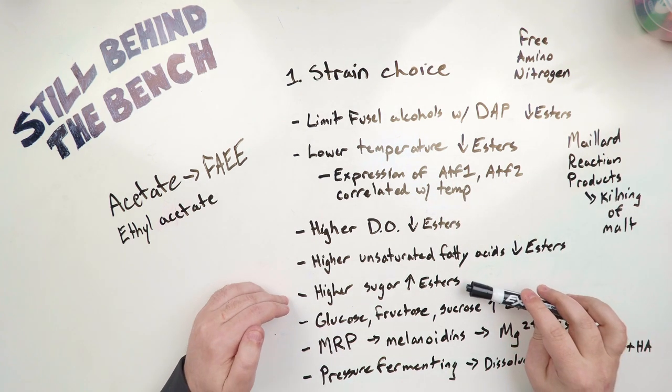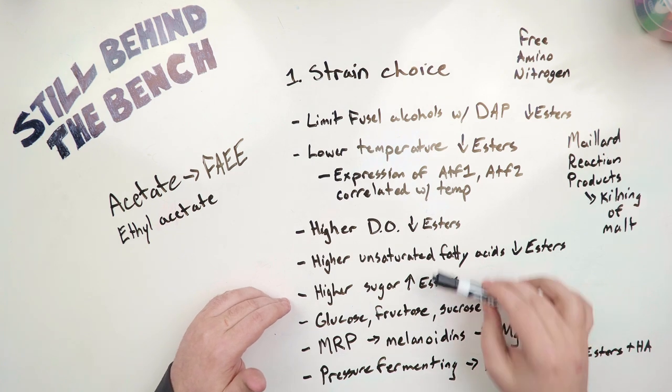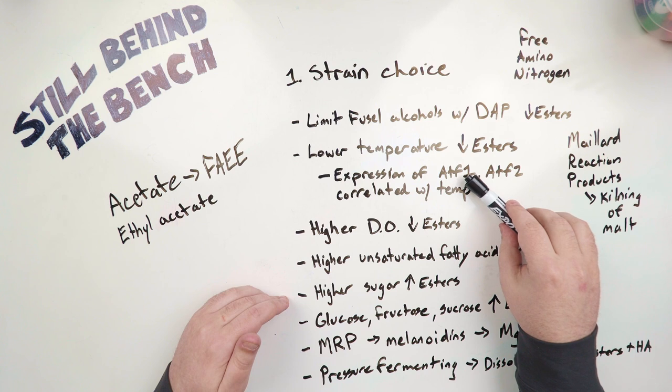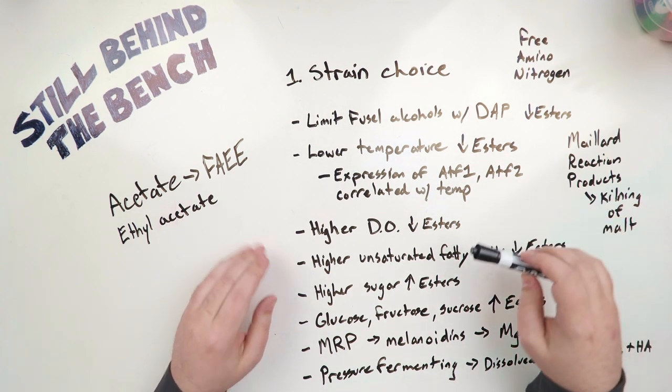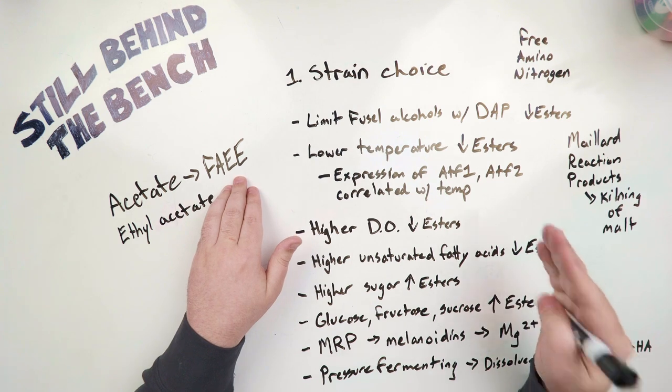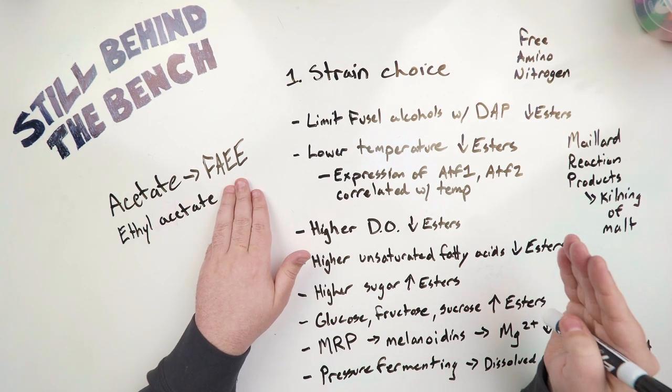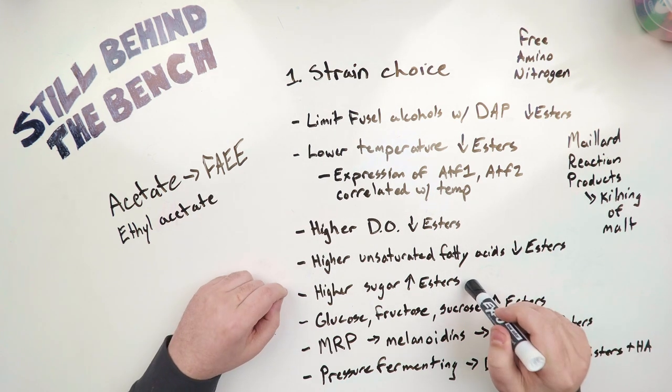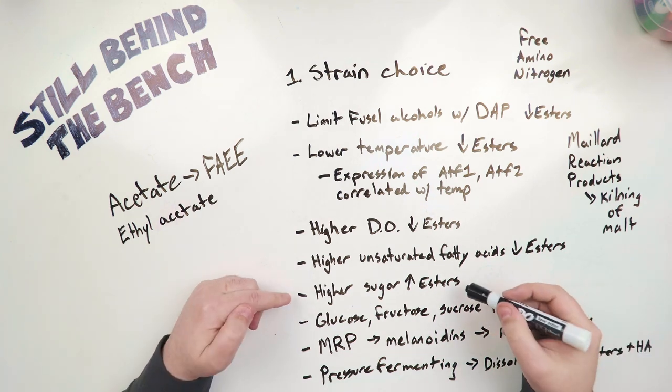Next up, we have higher sugar. So higher sugar means higher growth, but it also does the opposite of these two and it promotes production of the ATF1 enzyme. But not only that, it also promotes production of the ATF2 and all the other enzymes like IMO32, EEB1, EHT1, and EAT1. This promotes the production of those esters. Try to keep your sugar levels as low as you can and still get the ABV that you want.